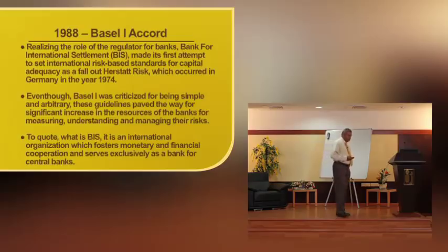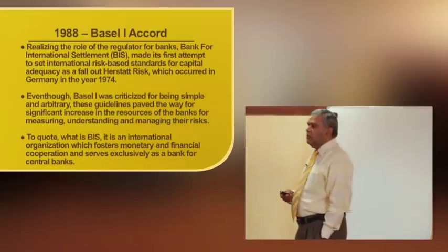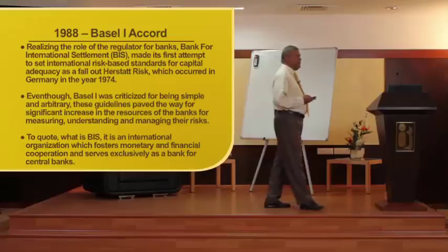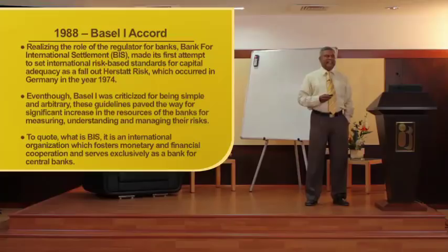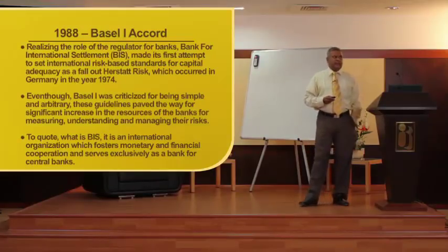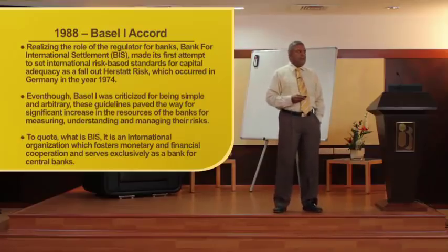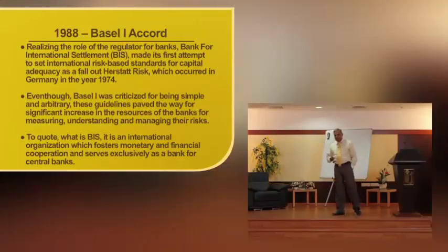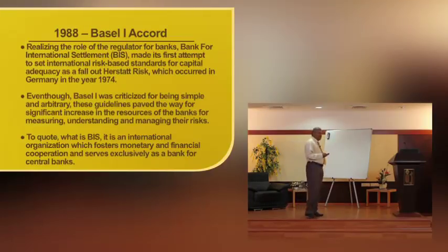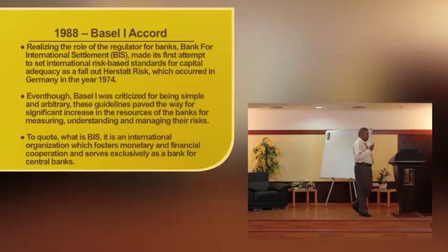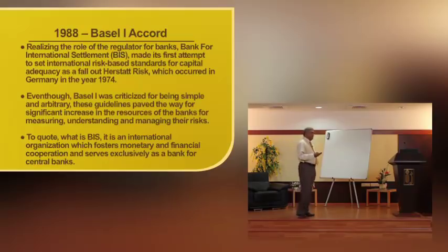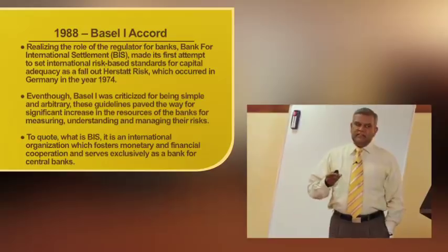Now let us move on to the Basel Accord. Bank for International Settlement has come out with three accords: Basel I, Basel II, and Basel III. The first and initial accord is Basel I of 1988. Realizing the role of the regulator for banks, the Bank for International Settlement made its first attempt to set international risk-based standards for capital adequacy as a fallout of the Herstatt Risk. Herstatt Risk is a German bank that failed purely because of counterparty transactions in 1974, and this failure resulted in a number of financial institutions failing in Germany. This forced BIS to come out with the Basel I Accord.